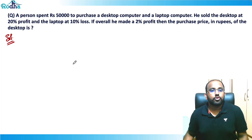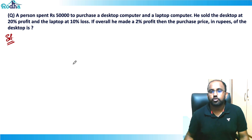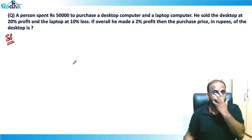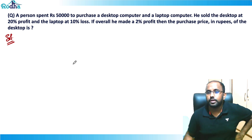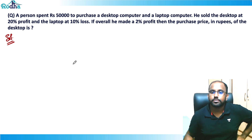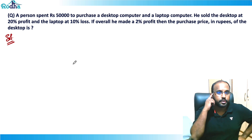Hi everyone. This is a question from CAT 2020 Slot 1. It's given that a person spent over ₹50,000 to purchase a desktop computer and a laptop computer. He sold the desktop at 20% profit and the laptop at 10% loss. If overall he made a 2% profit, then what is the purchase price of the desktop? That's the question.